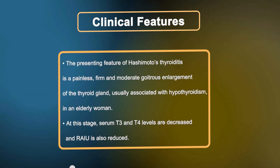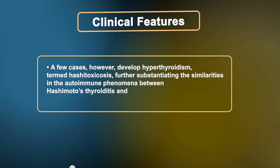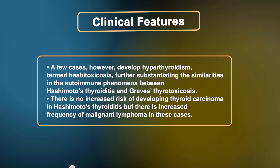The presenting feature of Hashimoto's thyroiditis is a painless, firm, and moderate goitrous enlargement of the thyroid gland, usually associated with hypothyroidism in an elderly woman. At this stage, serum T3 and T4 levels are decreased and TSH is also reduced. A few cases develop hyperthyroidism, termed Hashimoto's toxicosis, further substantiating similarities with Graves thyrotoxicosis. There is no increased risk of thyroid carcinoma, but there is increased frequency of malignant lymphoma in these cases.